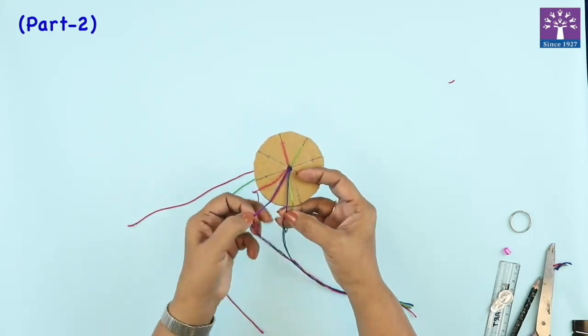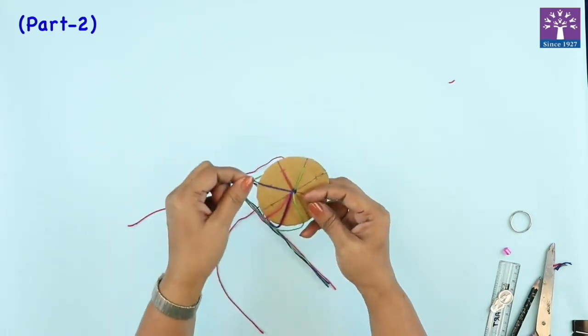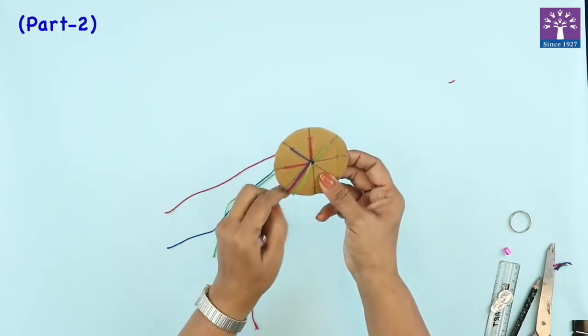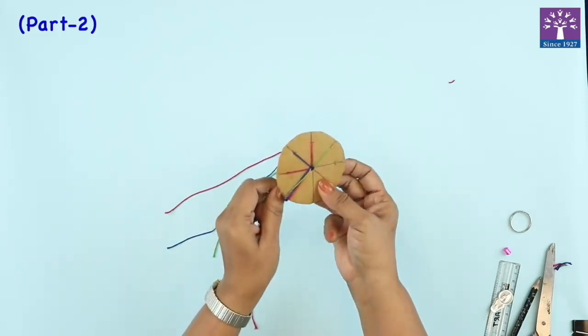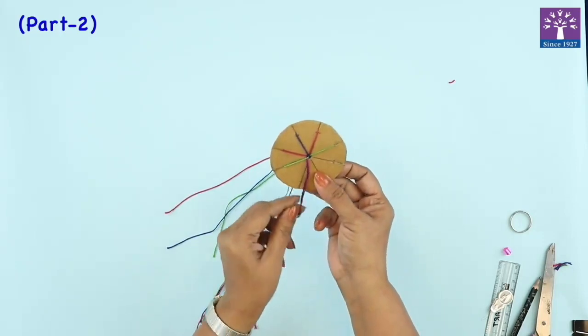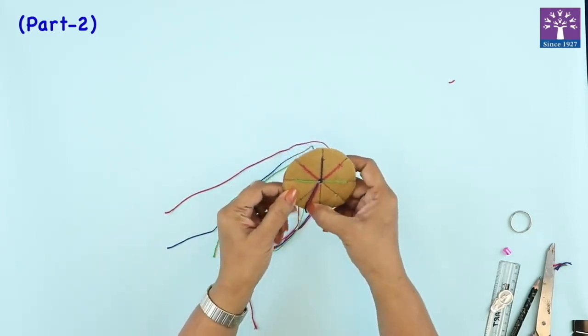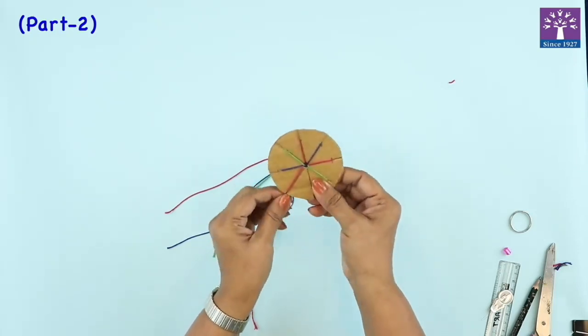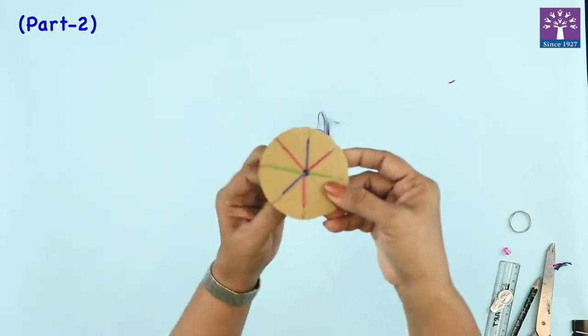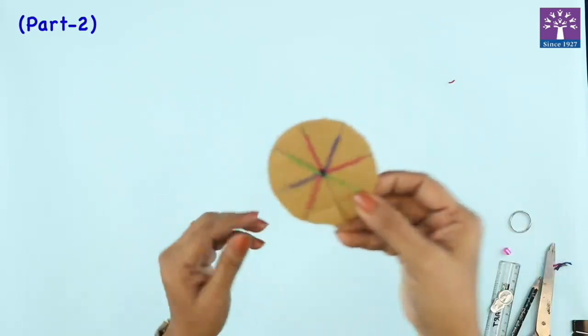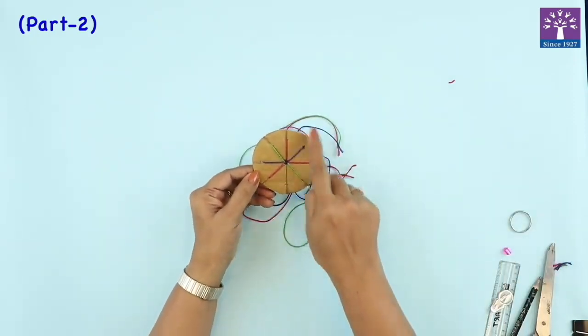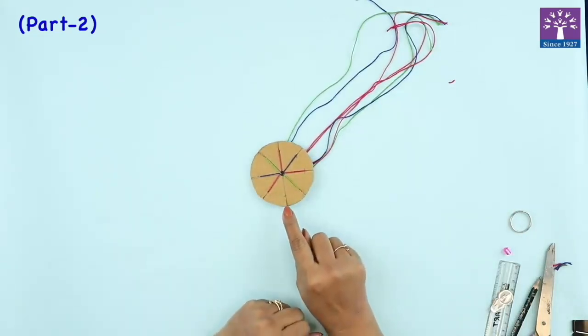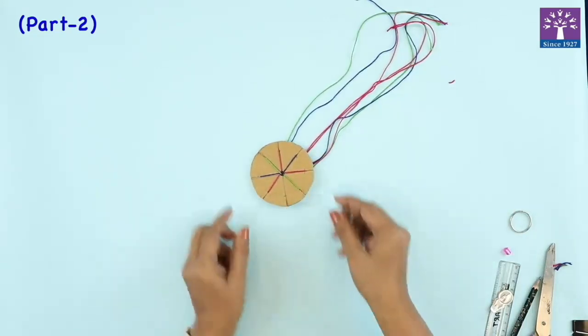I'll try to take different colors. Maybe one color will be repeated somewhere. So I have fixed 7 threads in the 8th slit. The 8th slit which is empty is facing towards me.